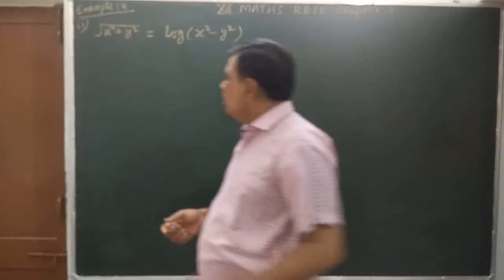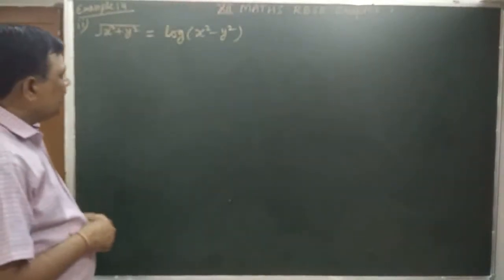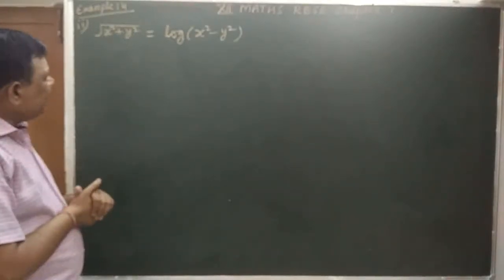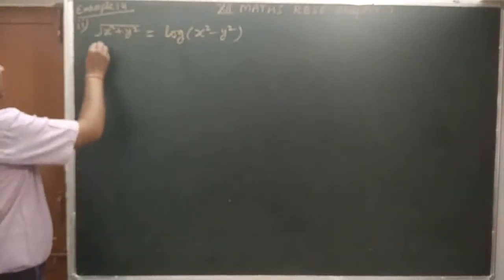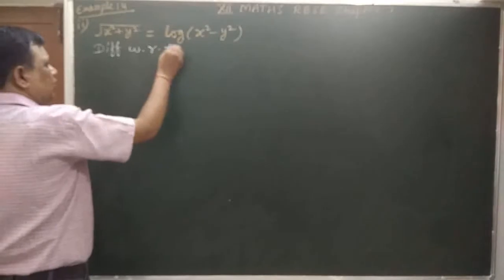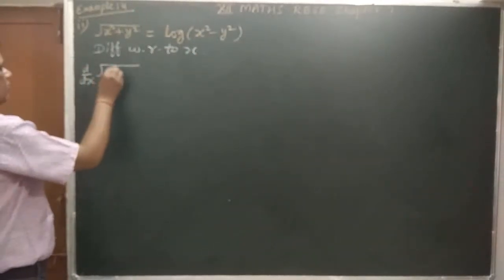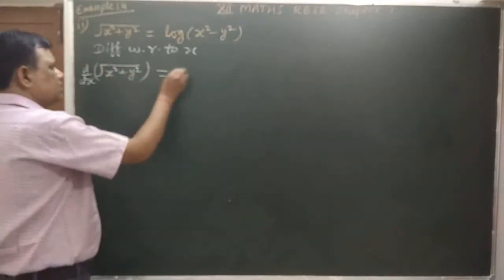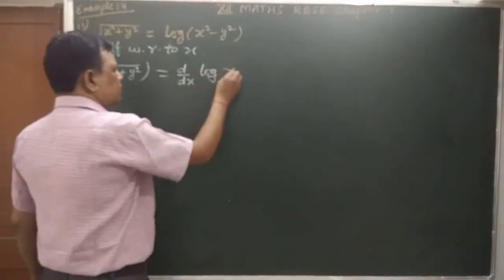The second part: root of x squared plus y squared equals log of x squared minus y squared. If you want to differentiate with respect to x, d by dx of x squared plus y squared is equal to d by dx of log of x squared minus y squared.